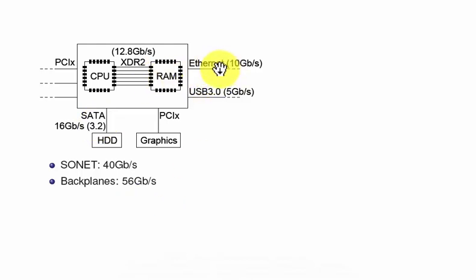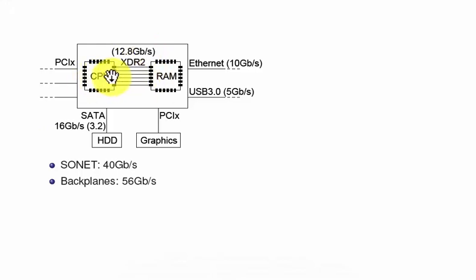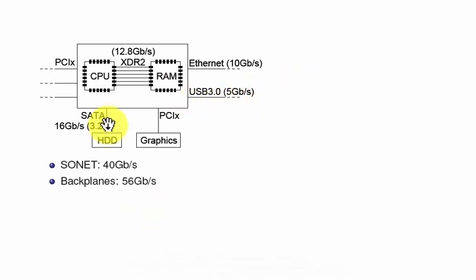Every interface — Ethernet at 10 gigabits per second, USB 3 at 5 gigabits, SATA at 16 gigabits per second — all operate at gigabit speeds. These were all at low speed before and the speed has been increasing over time. Between the CPU and RAM there are many lines and each carries data at many gigabits per second.